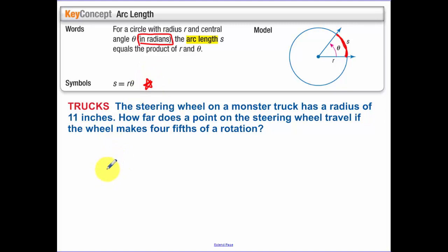So the steering wheel of a monster truck has a radius r of 11 inches. How far does a point on the steering wheel travel if the wheel makes 4 fifths of a rotation? So theta. 4 fifths of one rotation which is 2 pi. One rotation. One complete rotation is 2 pi.